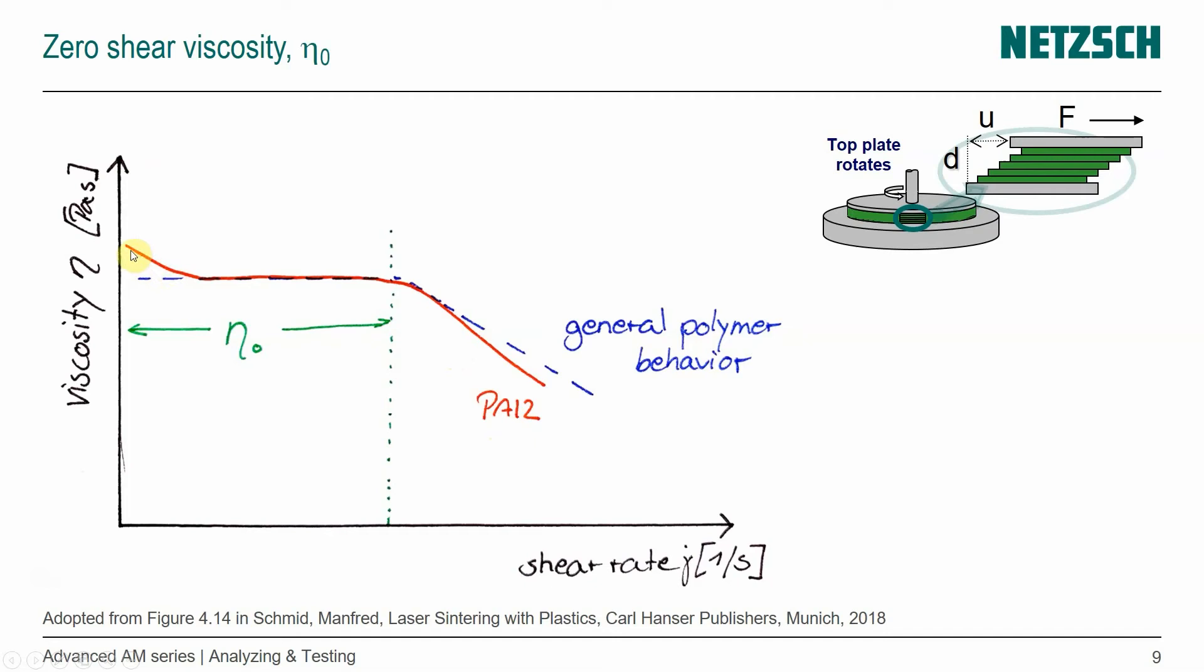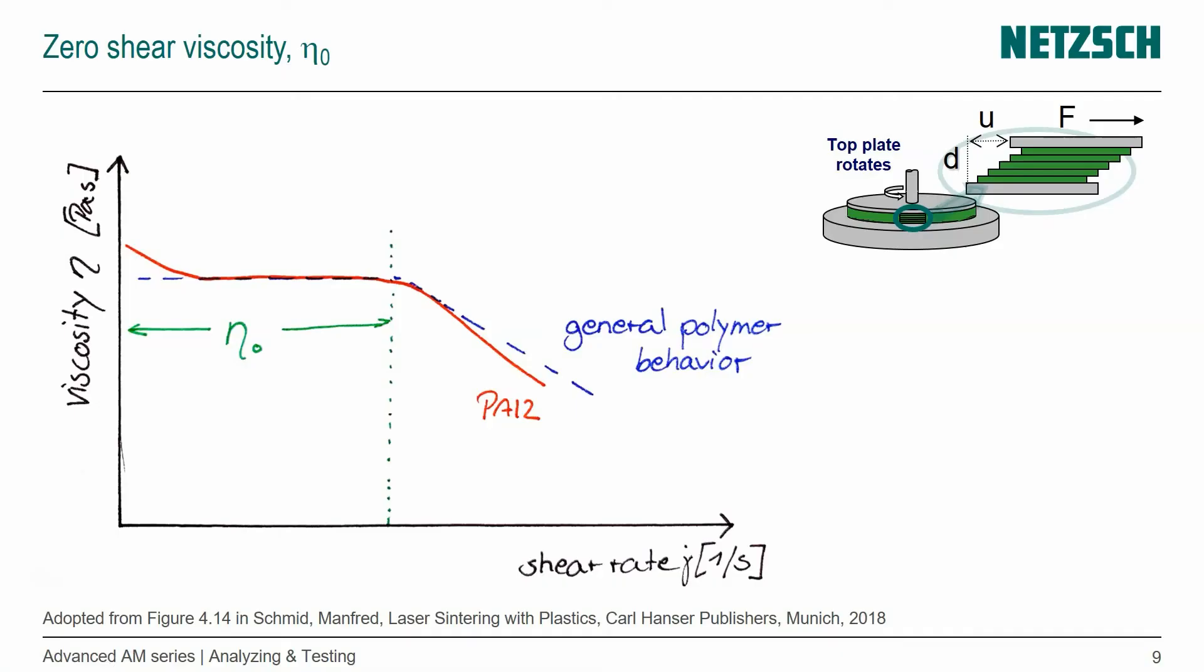And that is related to the continuing polycondensation that also happens during such a measurement. So the polycondensation is responsible for this little increase if we go in this direction as we're going to lower shear rates.